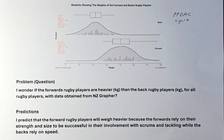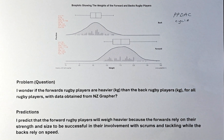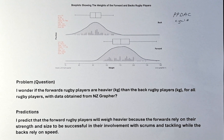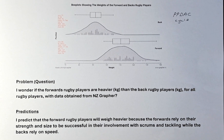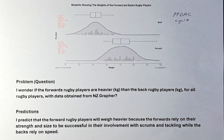Once you have the problem, you need to make a prediction. I predict that the forward rugby players will be heavier because the forwards rely on their strength and size to be successful in their involvement with scrum and tackling, while the backs rely on speed to get past the defender. That is how we write the question and make a prediction.